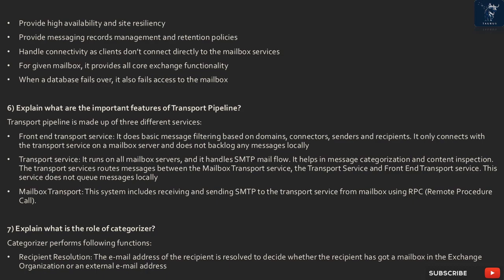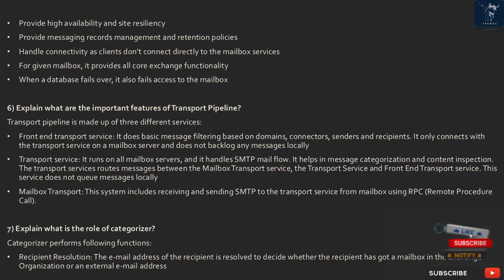Question 6: What are the important features of the transport pipeline? The transport pipeline is made up of three different services. Front-End Transport Service: it does basic message filtering based on domains, connectors, senders, and recipients. It only connects with the transport service on a mailbox server and does not backlog any messages locally.